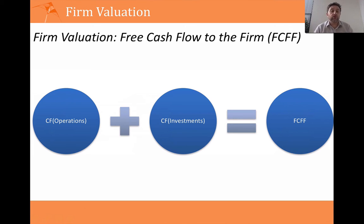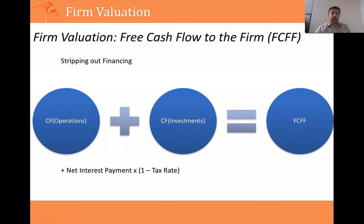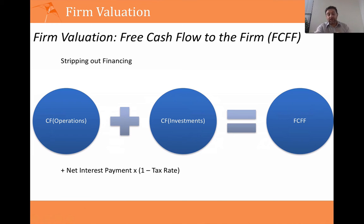Sometimes companies will put financing items under operations, as if they're actually part of the business, and we want to strip that out. For example, interest payments may be included in operations as outflows, reducing the reported cash flow from operations. We want to bring that back in, so we add it back on, and that gives us the free cash flow to the firm.